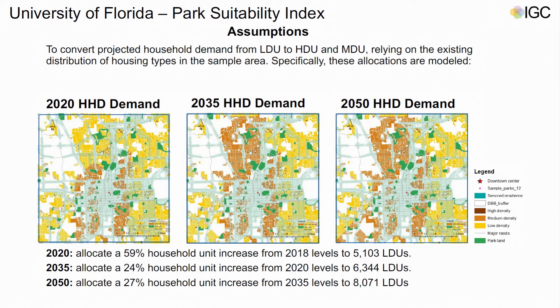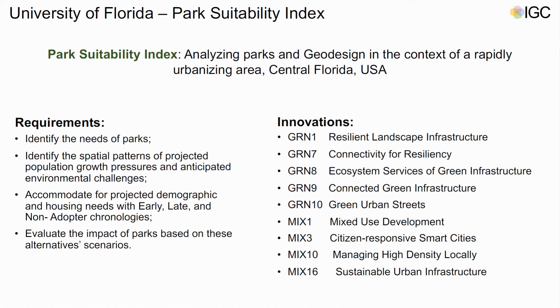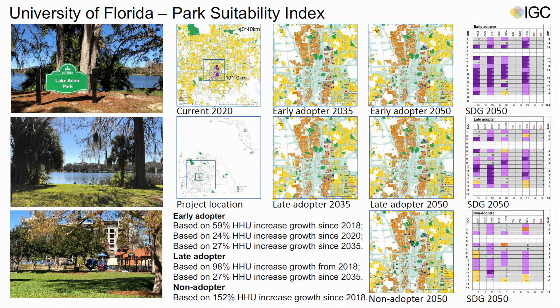Faced with those problems, we propose to convert the projected household demand from low-density units to high- and median-density units, relying on the existing distribution of household types in the sample area. We conclude that each scenario will face different increasing rates and numbers of household units — so parks will experience pressures from these changes. We introduce the PSI as a useful measurement to identify projected growth pressures and environmental changes, with parks evaluated based on alternative scenarios.